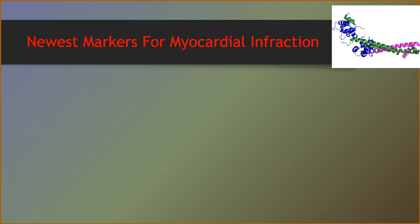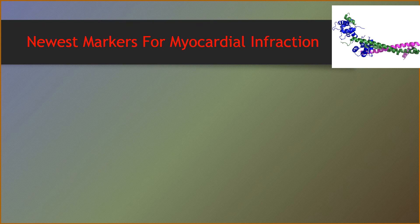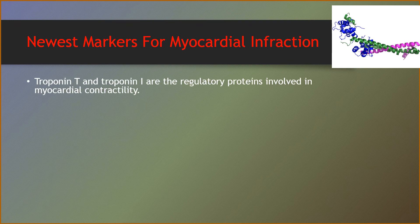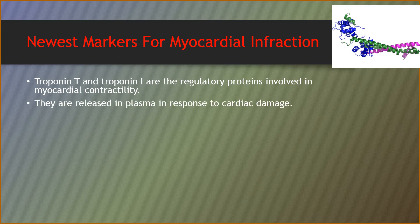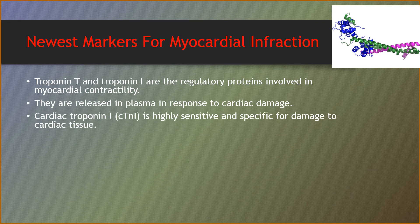Newer markers for myocardial infarction: important enzymes in the investigation of heart disease are creatine kinase, lactate dehydrogenase, and aspartate transaminase. Important enzymes in the investigation of liver disease are aspartate transaminase and alkaline phosphatase. The figures show that the blue ribbon is troponin C, the green ribbon is troponin I, and the magenta one is troponin T. Troponin T and troponin I are regulatory proteins involved in myocardial contractility, defined as the tension developed and velocity of shortening — the strength of contraction of the myocardial fibers at a given preload and afterload. They are released into plasma in response to cardiac damage. Cardiac troponin I is highly sensitive and specific for damage to the cardiac tissue.